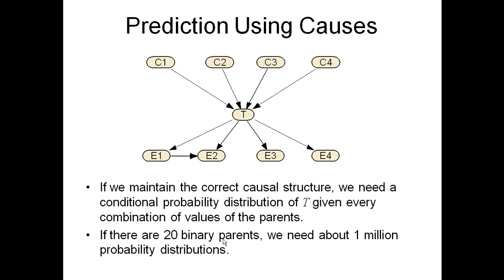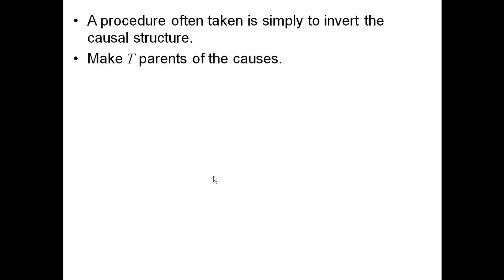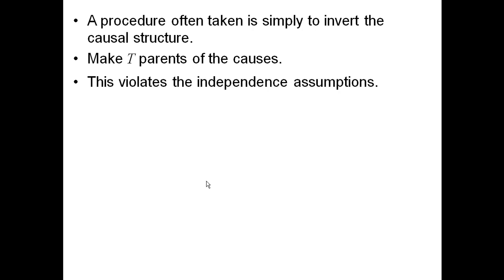A procedure often taken by researchers is simply to invert the causal structure — make T a parent of the causes — because then you can get the distributions easily. You just need the probability of each cause given T, which is as easy as when we do it for effects. But this violates the independence assumptions. Let me review what those independence assumptions are and show how they are violated.